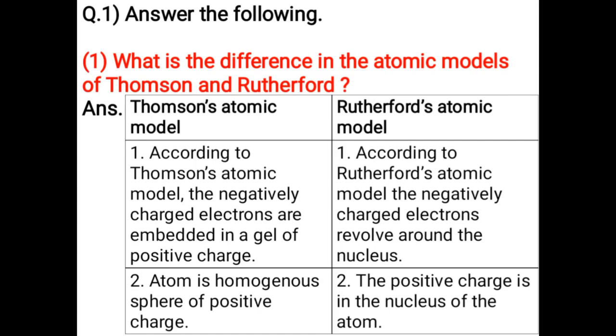In Thomson's model, the atom is a homogeneous sphere of positive charge. In Rutherford's model, the positive charge is concentrated in the nucleus of the atom.